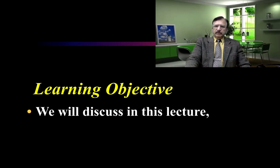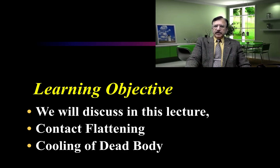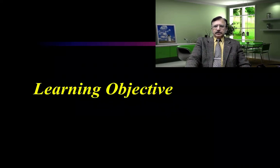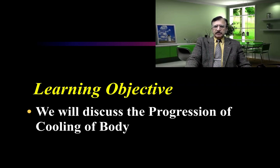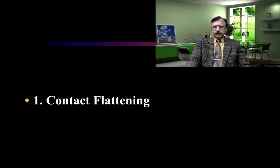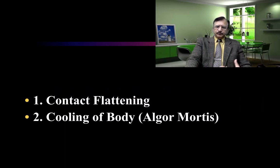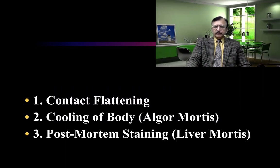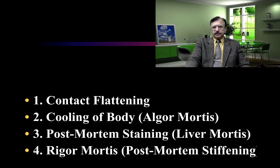In this lecture I will be discussing contact flattening in detail and we will start the discussion on cooling of the dead body and its progression. The early changes are: contact flattening, cooling of the body (also known as algor mortis), post-mortem staining or livor mortis, and rigor mortis, which is the post-mortem stiffening. These changes are called early changes — occurring for a few hours after death.